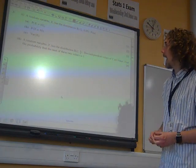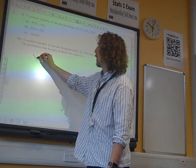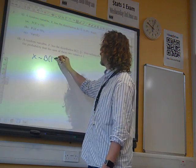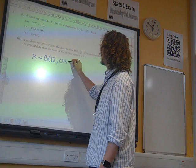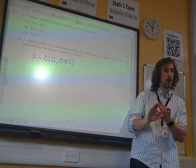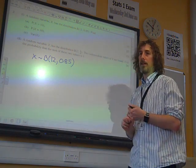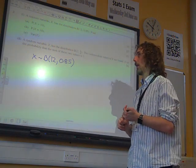Okay, question 3. A random variable X has the distribution X is a binomial distribution with N is 12 and P is 0.85. That means, remember, 12 independent trials of this experiment, and the probability of a success in each one is 0.85.